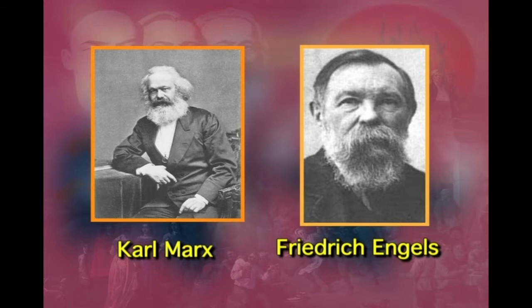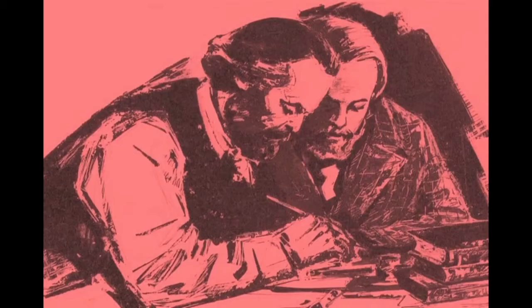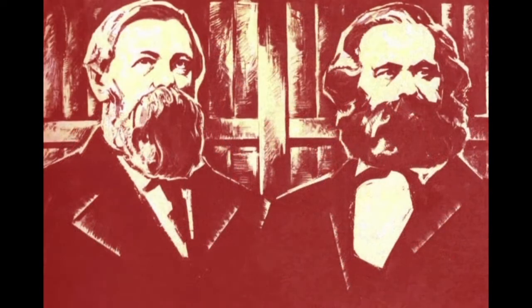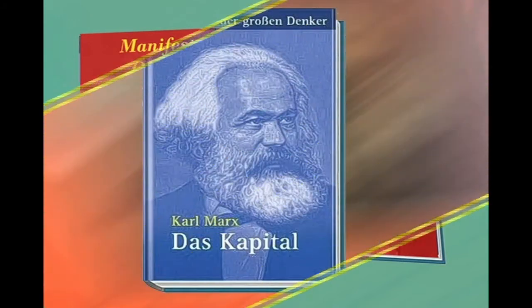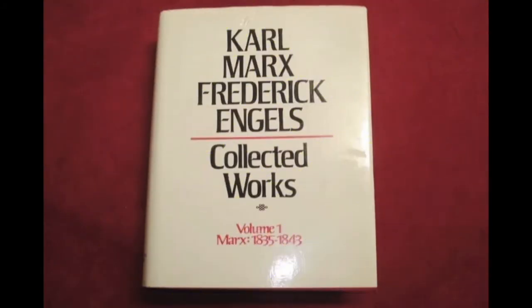Marxist thought originates in the writings of Karl Marx and Friedrich Engels, two 19th-century German thinkers. Both Marx and Engels began with work in philosophy, but with a strong interest in economics and political theory. Their major works such as the Communist Manifesto, Das Kapital, and others insisted that we need to rethink the way in which analysis of culture is done.